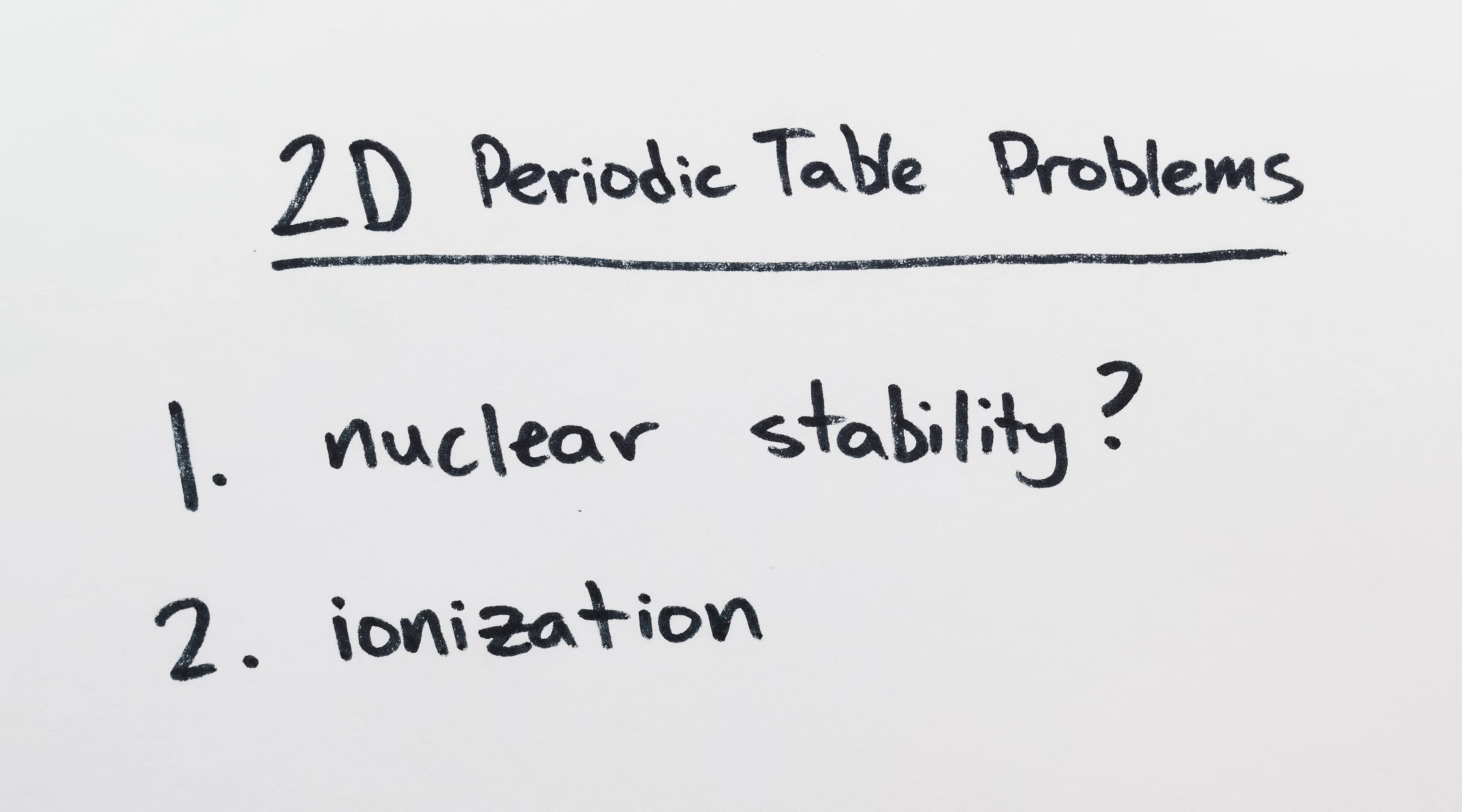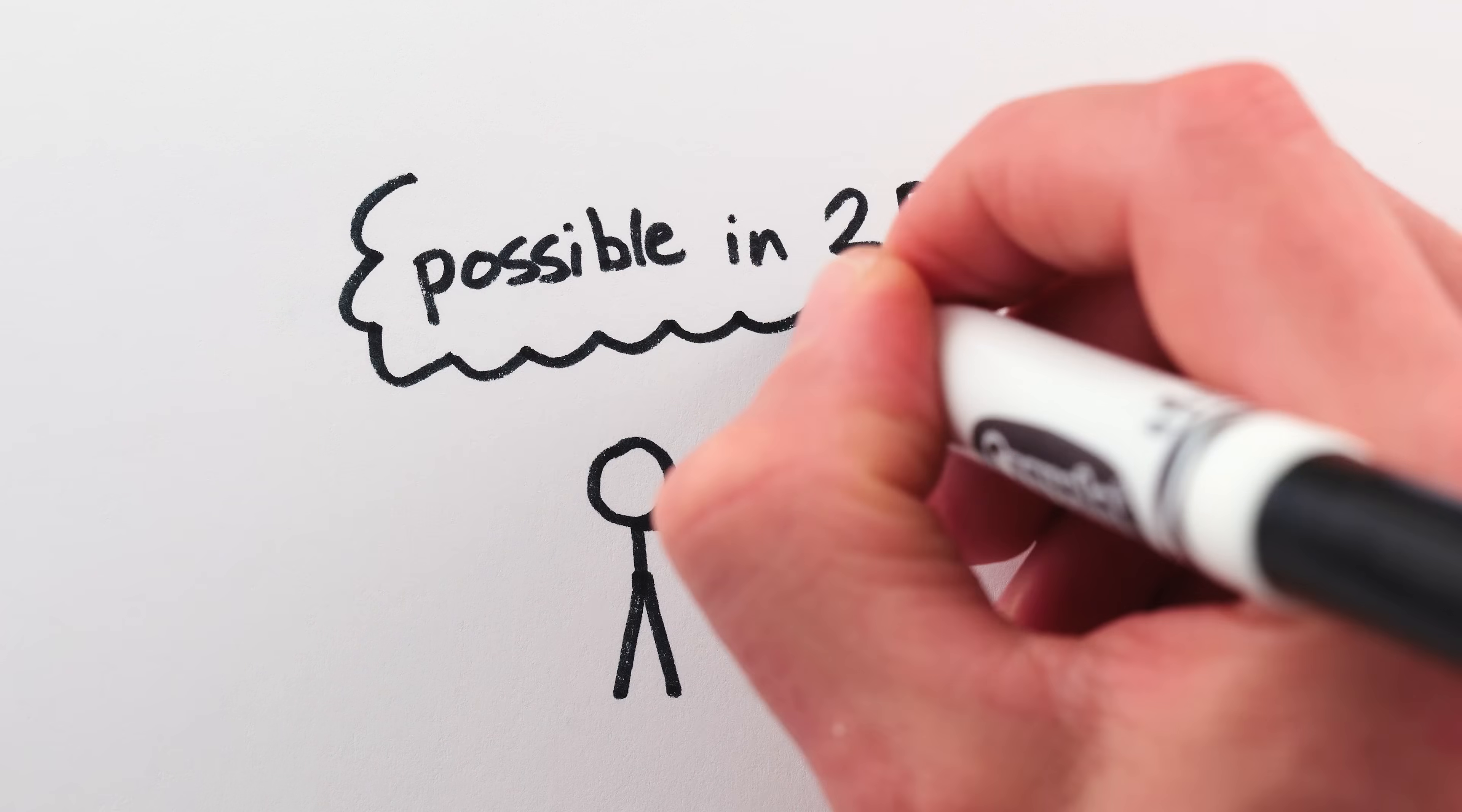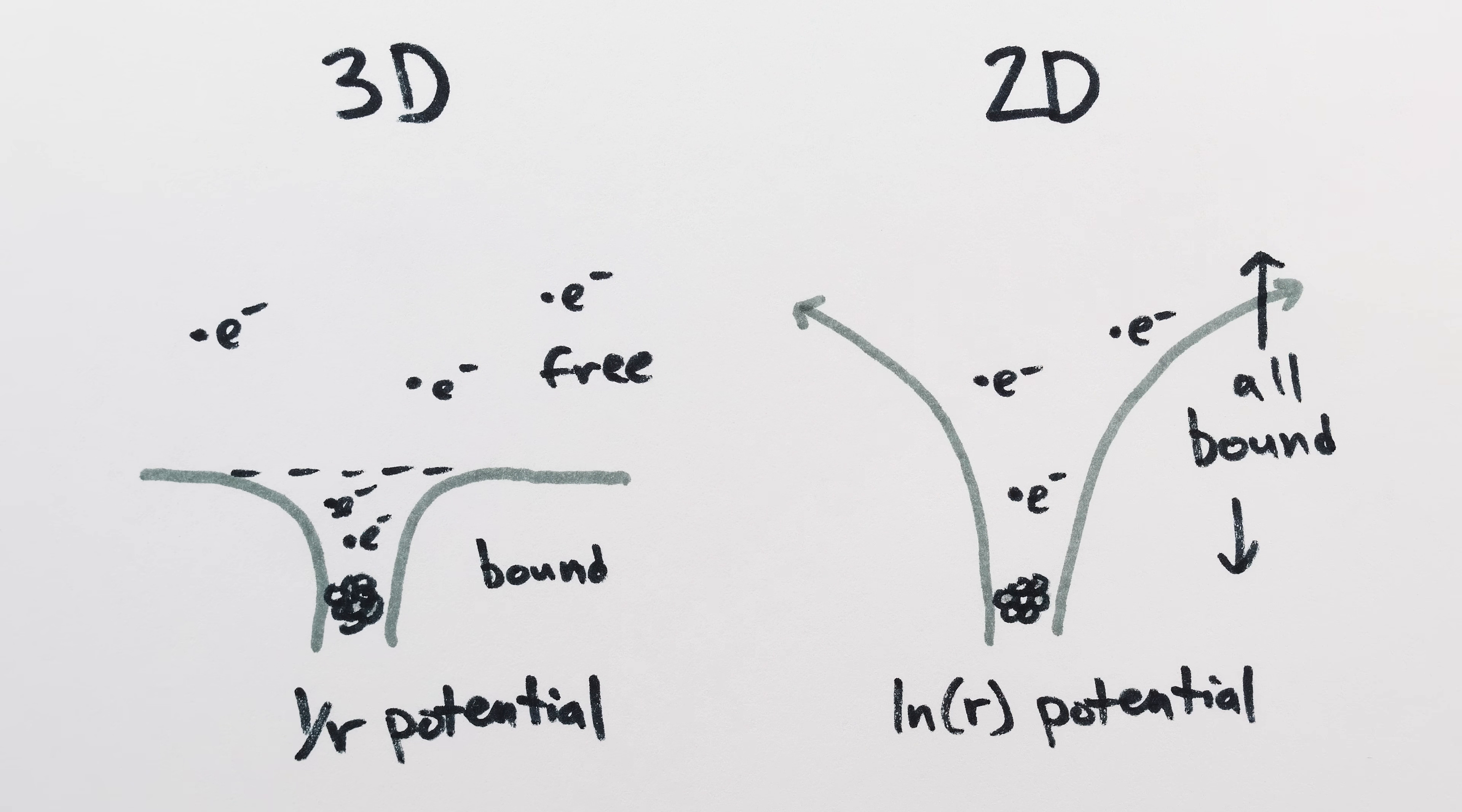Ok, so the two issues that could completely invalidate the rest of this video – 1, I have not looked at all into whether 2D nuclear physics allows stable nuclei, although it seems reasonable – if you don't have a nucleus, you can't have an atom. And 2, because of the nature of the electromagnetic force in two dimensions, it's not actually possible to ionize an atom, that is, to remove an electron completely, so molecules and chemistry might be totally different and very weird, and the periodic table might be irrelevant.